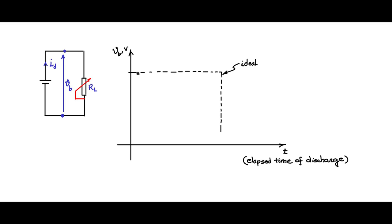In practice, the characteristic is much different. Setting RL to some value so a certain ID flows, a practical characteristic shows the voltage dropping with time as ID starts flowing out of the battery — as ampere-hours are removed, the charge is removed and the battery voltage starts decreasing. This drop in voltage is due to voltage lost in the dynamic internal resistance of the battery.